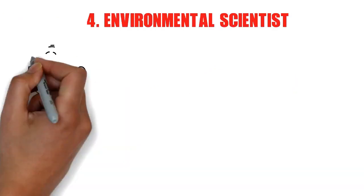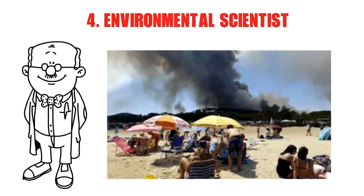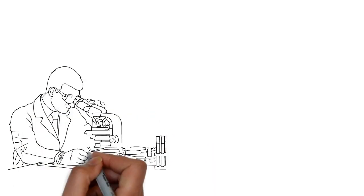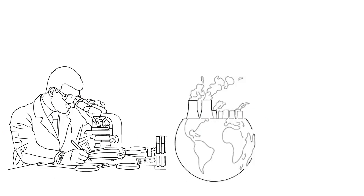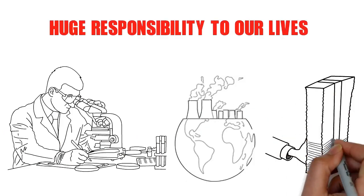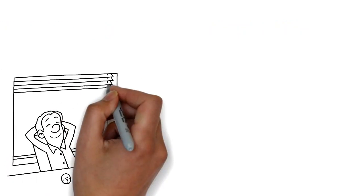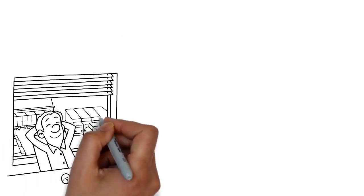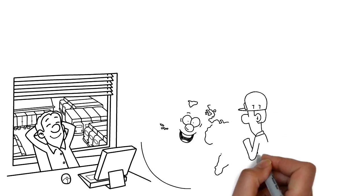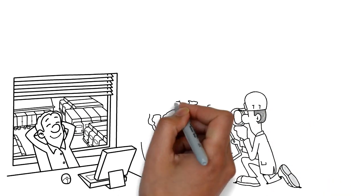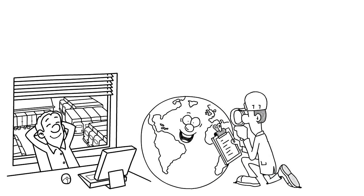Fourth, environmental scientists focus on how Earth's environment is damaging and protecting our lives. They collect samples and experiment in laboratories to find solutions to serious problems like climate change. They could be paid more than $60,000 a year. These are just assumptions — I carried out some research to tell you what career paths you can choose. For those of you that don't want to be an employee, you can always go ahead and start a business providing data to other businesses about different areas by examining how weather or nature could affect the structure of land.